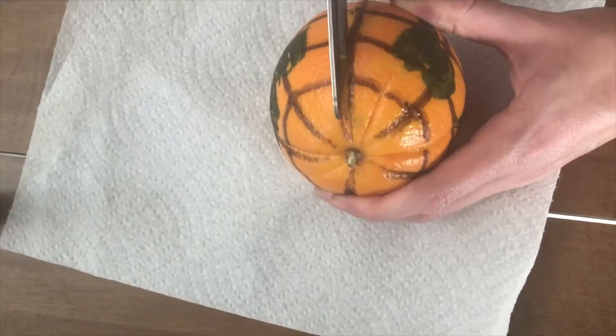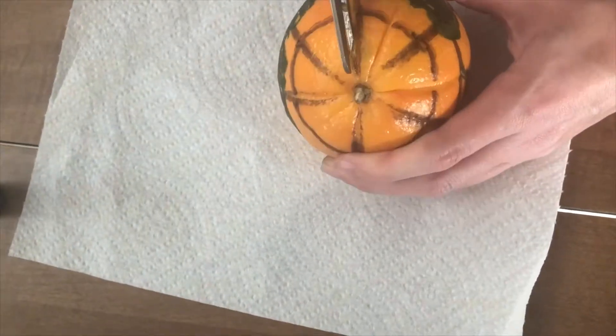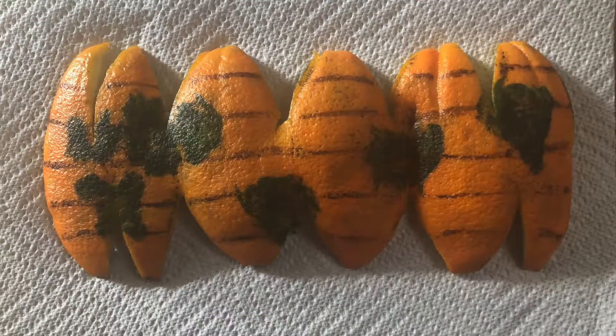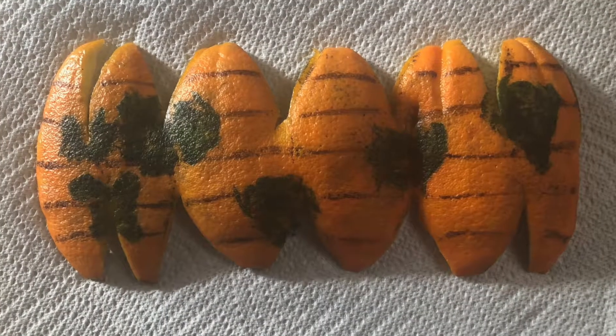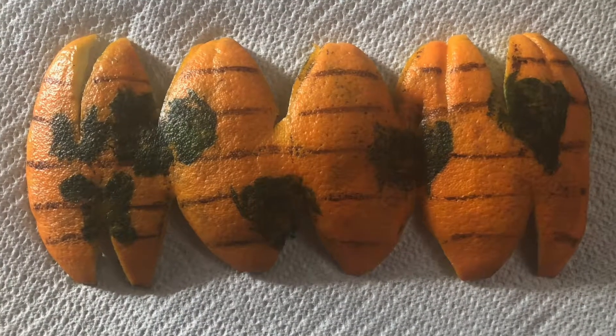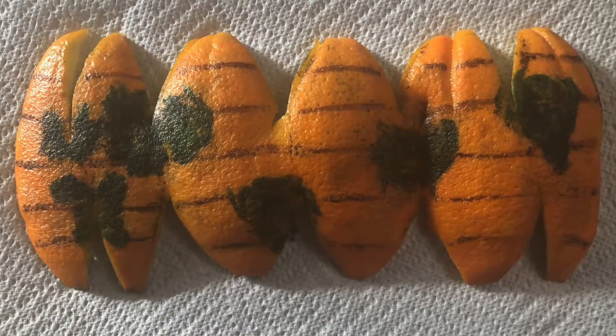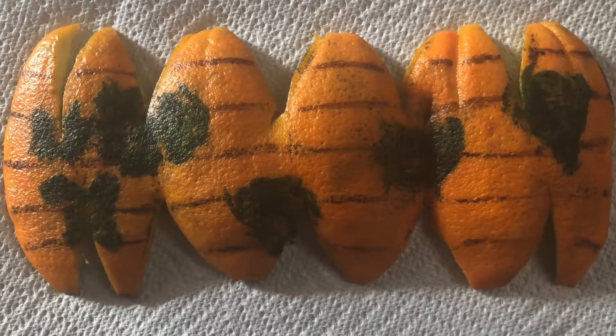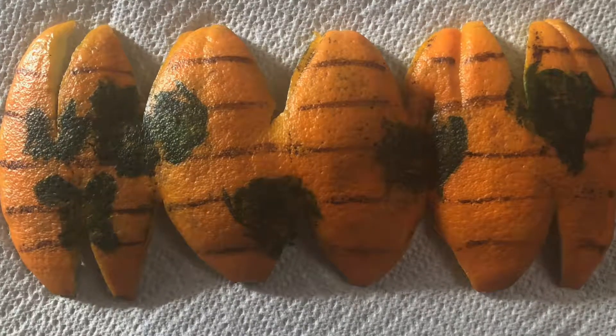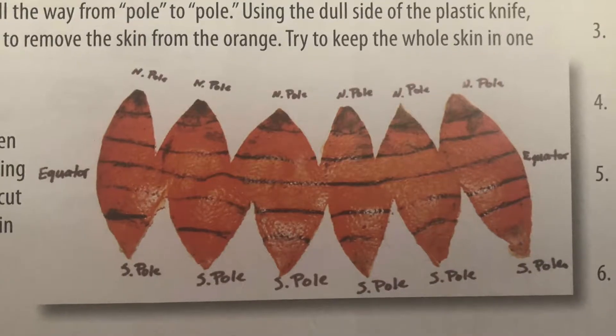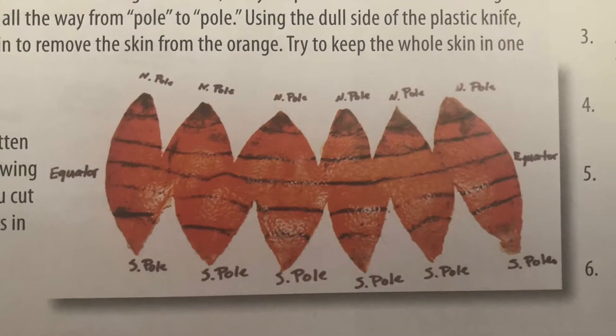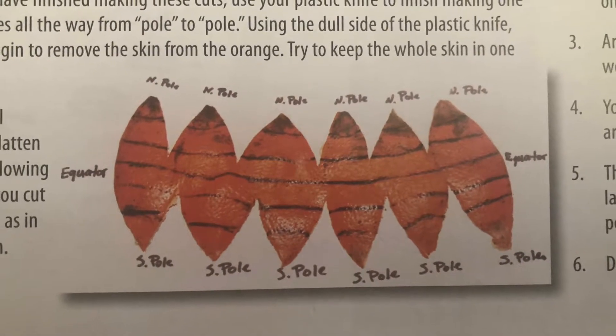Have them use a plastic knife to remove the skin from the orange. When they finish, have them lay the peel down and flatten it carefully. Compare with the picture on page 7 and answer the questions on page 7.